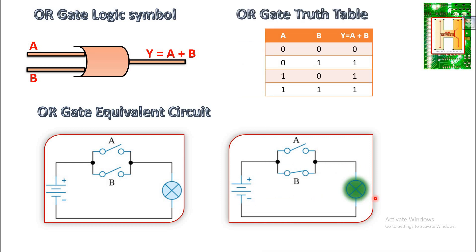Let us see the truth table. A and B are the inputs and Y equal to A plus B is the output. When both inputs are zero, the output is zero. When A is zero and B is one, the output is logic one. When A is one and B is zero, the output is also one. When both switches are at logic one, the output is one. In short, when any one input of the OR gate is logic one, the output is also logic one.